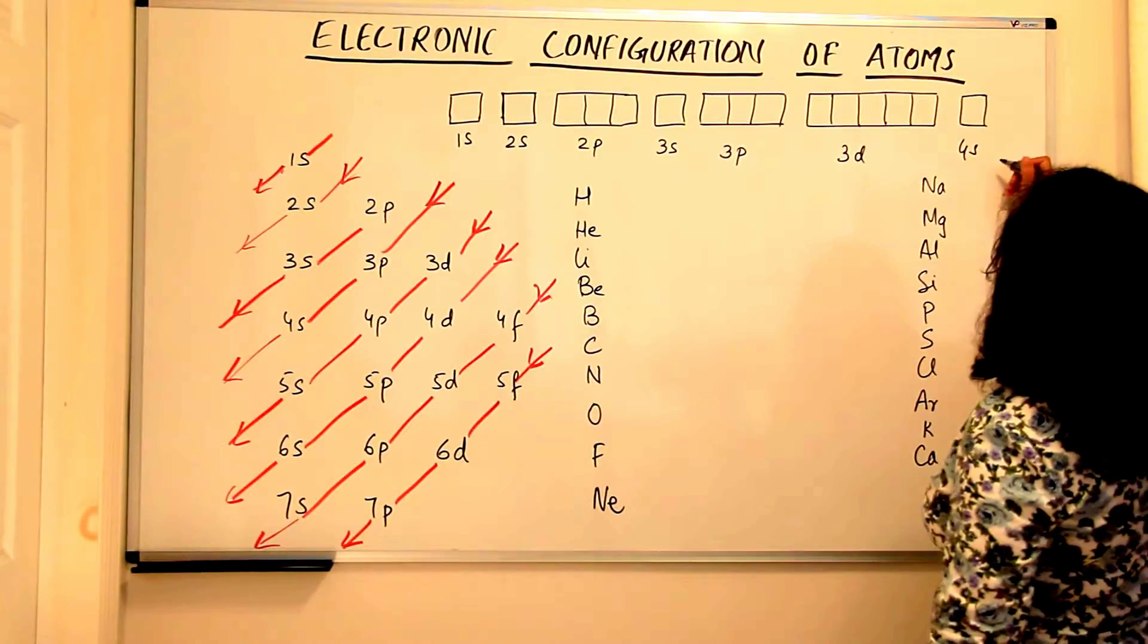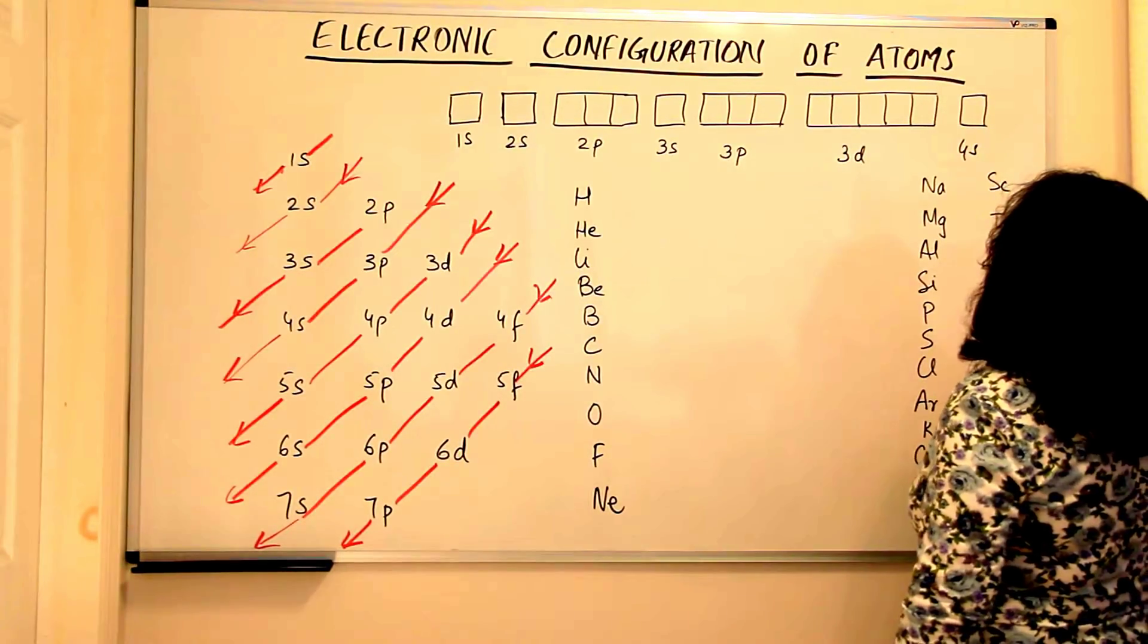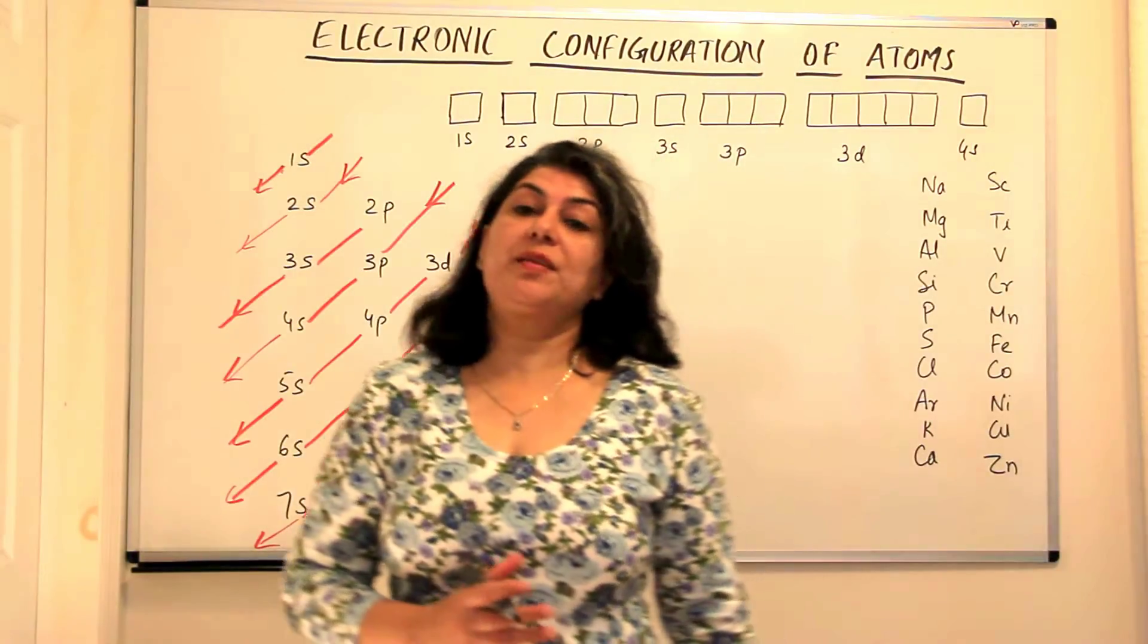And the next 10 would then be scandium, titanium, vanadium, chromium, manganese, iron, cobalt, nickel, copper and zinc. In the next chapter, that is the periodic table of elements, I will teach you in one of the videos how to memorize these 30 elements.